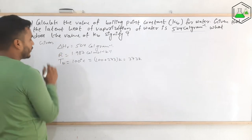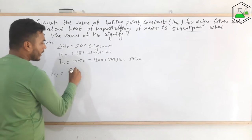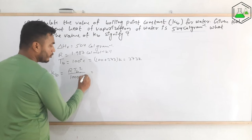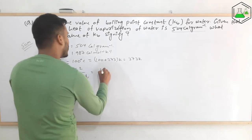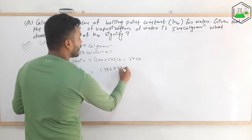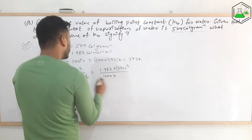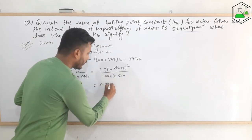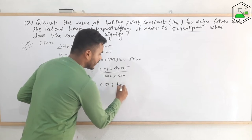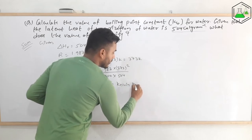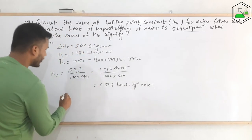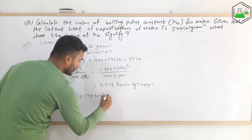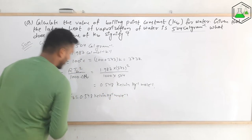Using the formula kb = R·Tb² / (1000·ΔHv): kb = 1.987 × (373)² / (1000 × 504). Putting this on a calculator, we get kb = 0.548 kelvin·kg/mol. So the molar elevation constant or boiling point constant for water is 0.548 K·kg/mol.